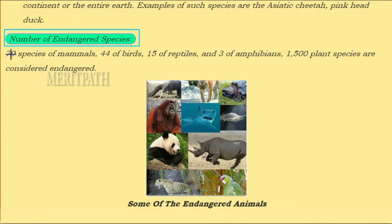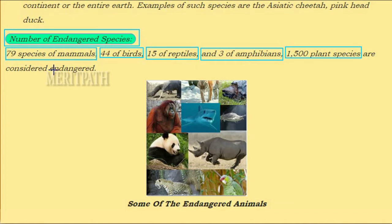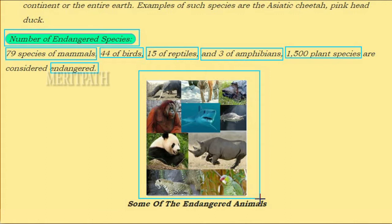In India, there are 79 species of endangered mammals, 44 birds, 15 reptiles, and 3 amphibians. Around 1,500 plant species are considered endangered.